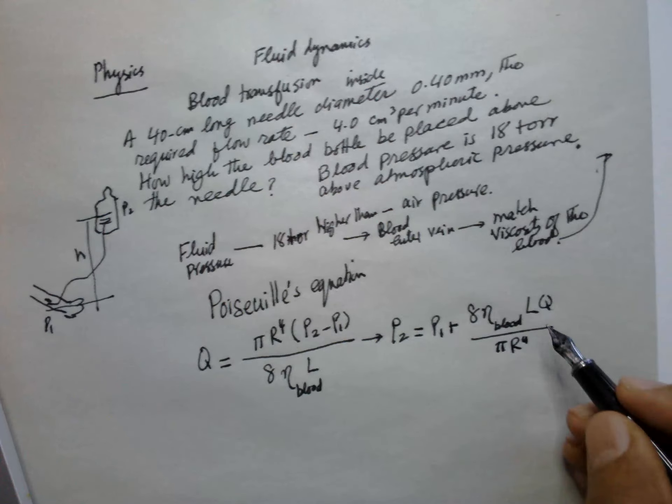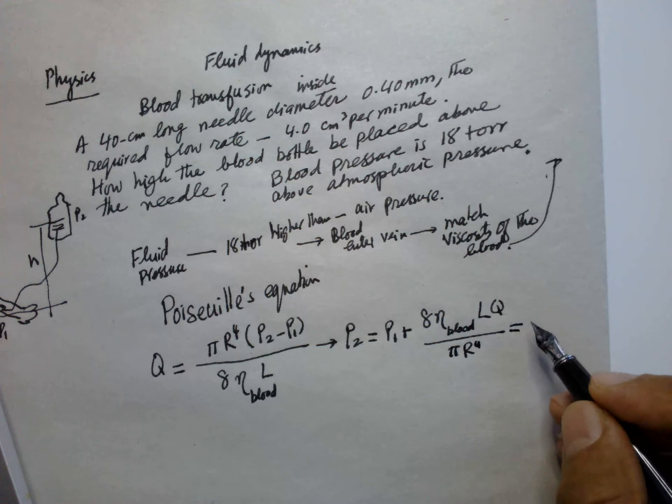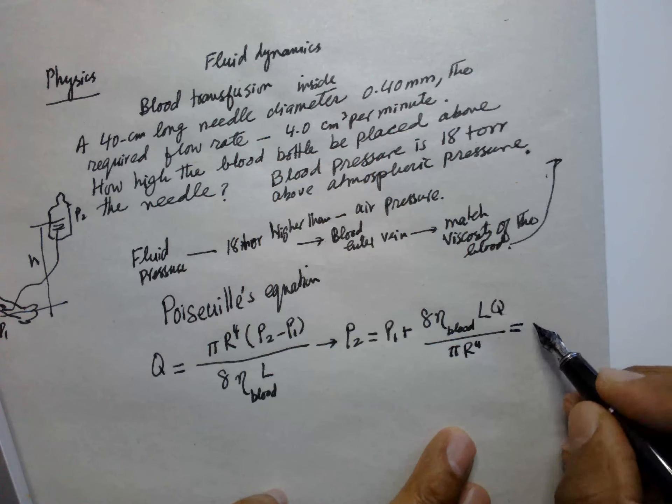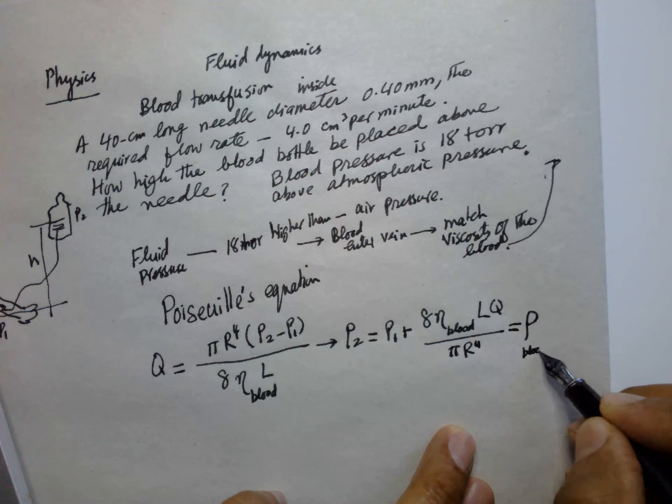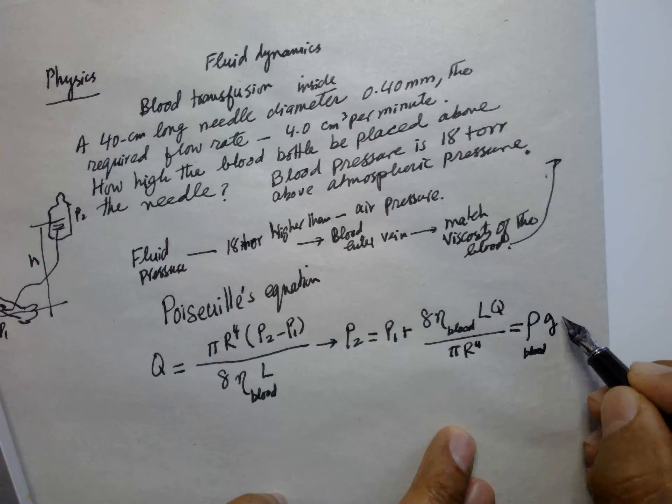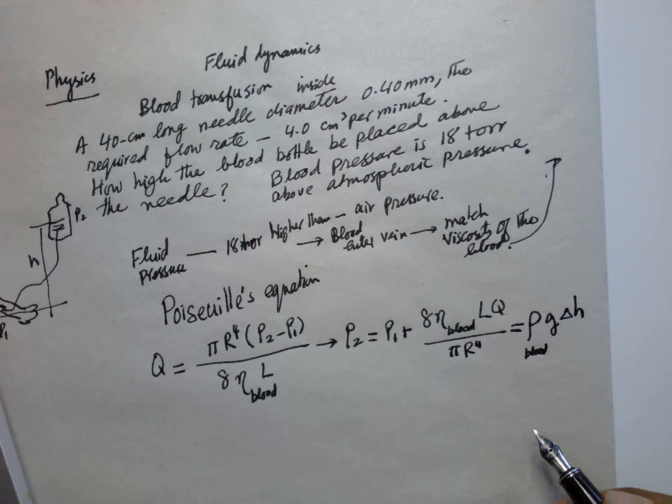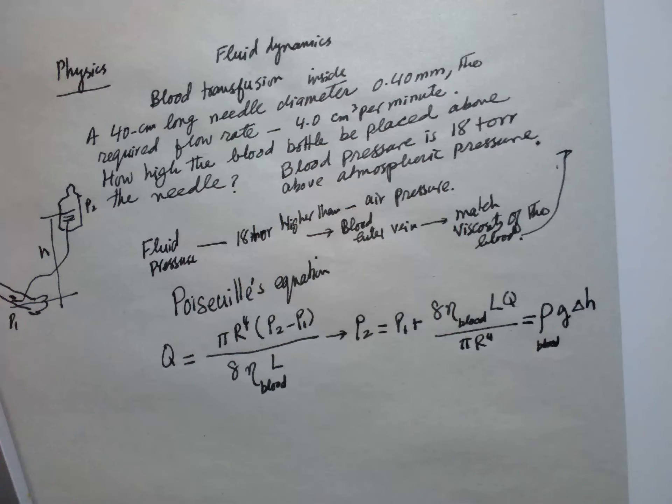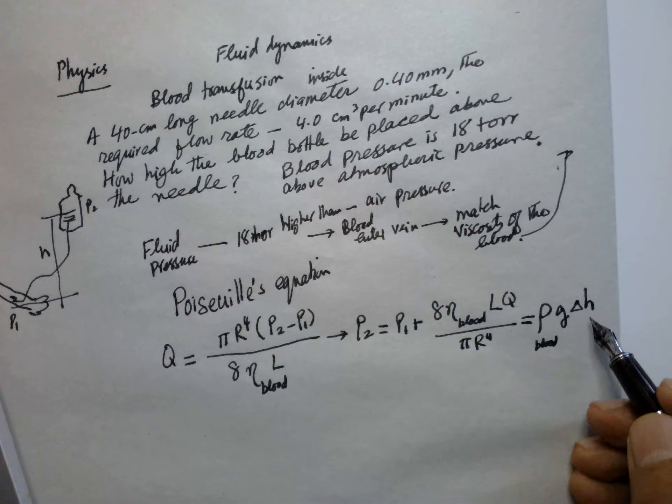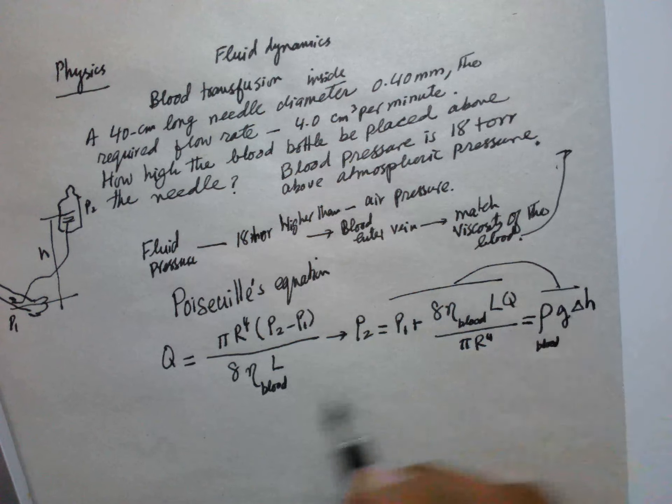This P₂ is a force per unit area, so this can be represented by the density of the blood multiplied by g times Δh, the potential energy divided by the area. So from here we can find out that these two equations are equal.